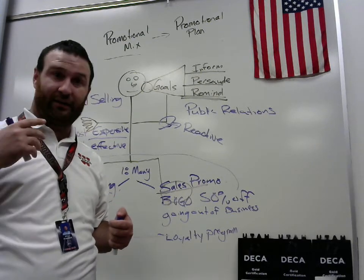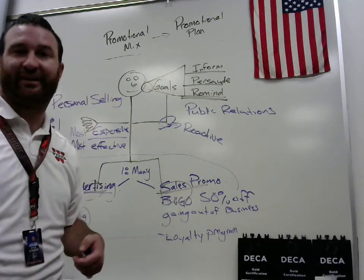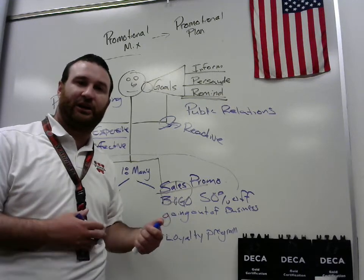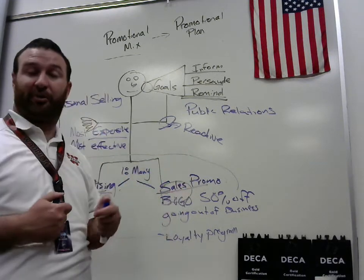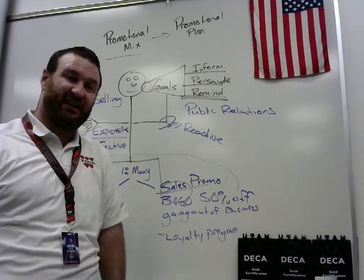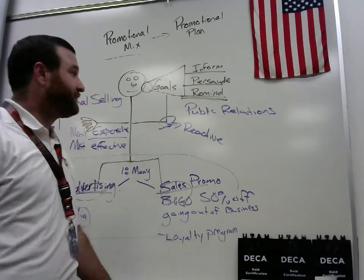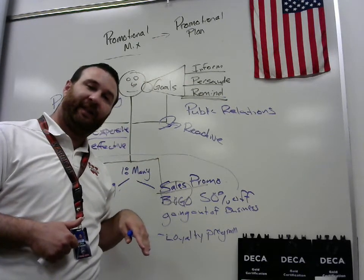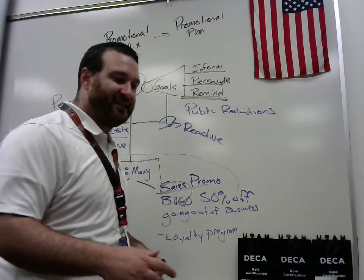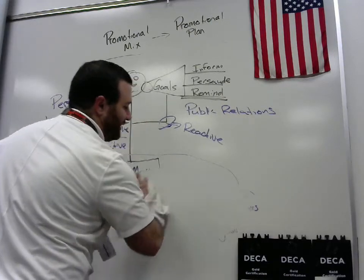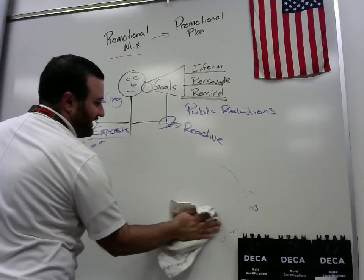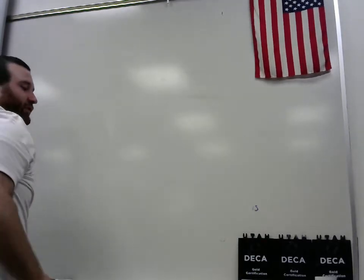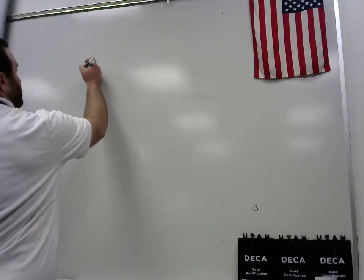A promotional budget is usually decided by a percent of projected sales. A common figure is 2% of anticipated sales, though some people spend a lot on promotion and others rely entirely on public relations. A promotional plan ties all of these things together with a goal, a budget, and what we call a schedule of activities — essentially a calendar for your promotion.